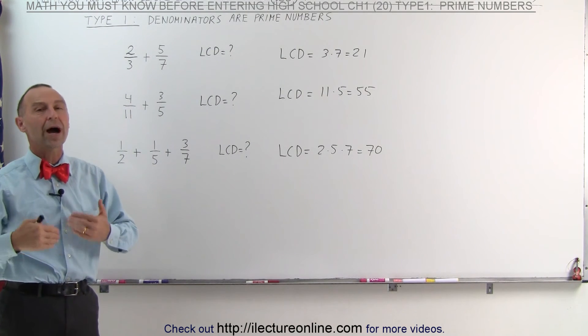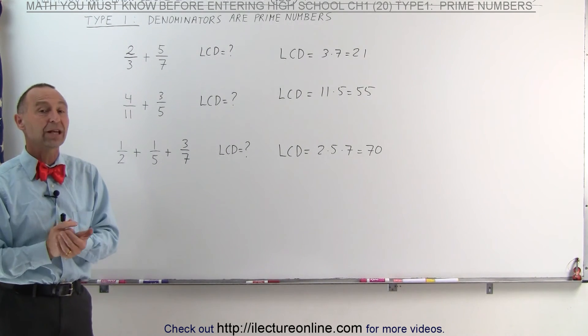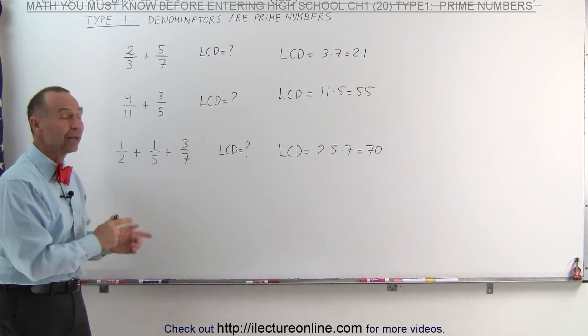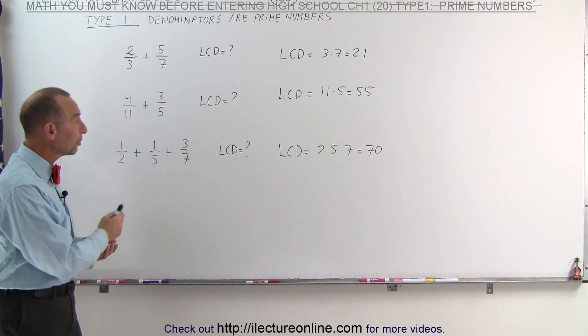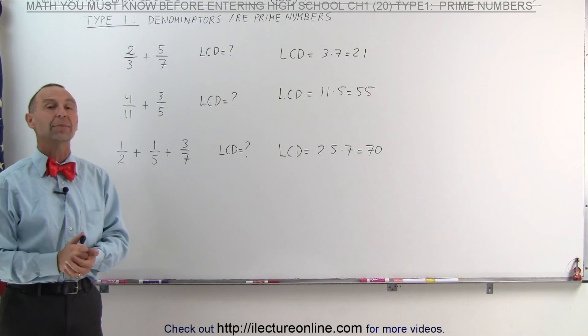Later on, we will then show you how to actually add the fractions together once we found the lowest common denominator. But here we have the technique, number one. When the denominators are prime numbers, we simply multiply the denominators together.